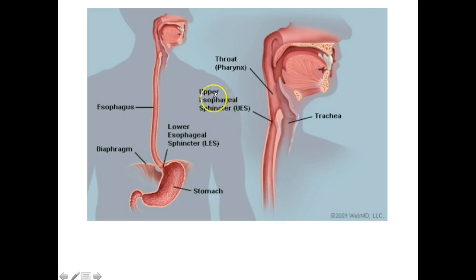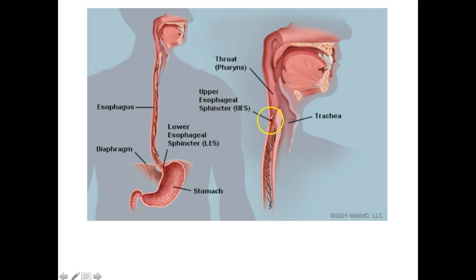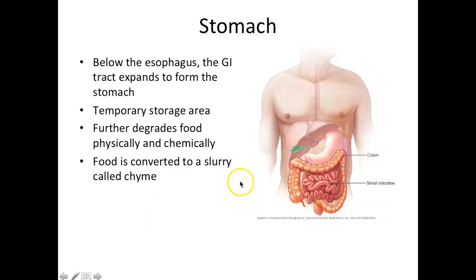Here was the pharynx at the back of the mouth, and here is the esophagus. There are going to be two sphincters: the upper gastroesophageal sphincter, which works as a valve, and the lower gastroesophageal sphincter. We'll talk about this more when we get to the stomach.